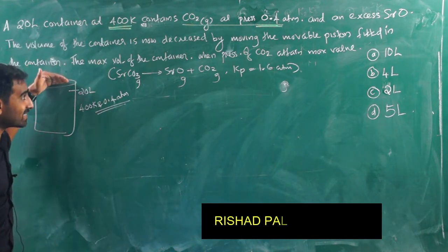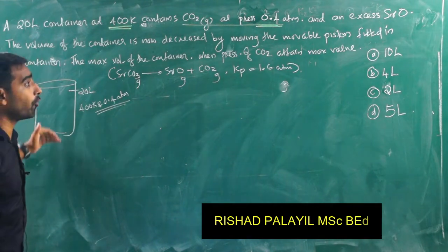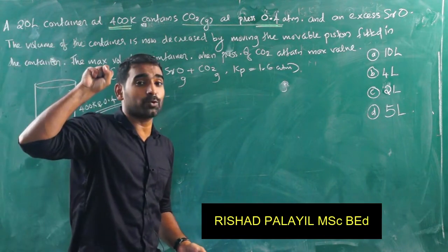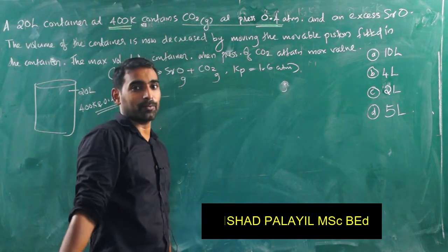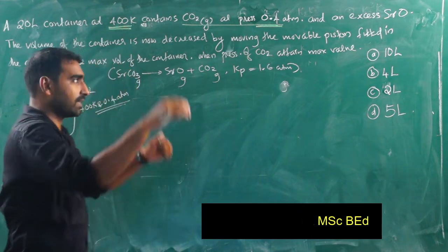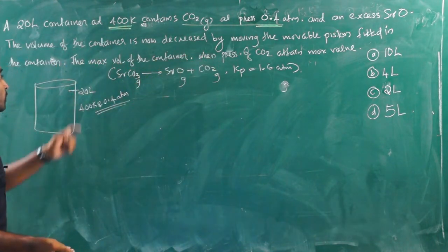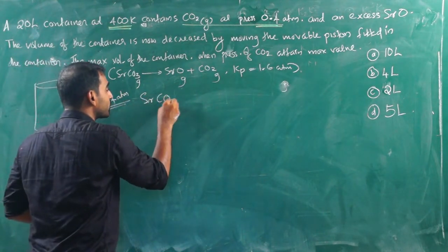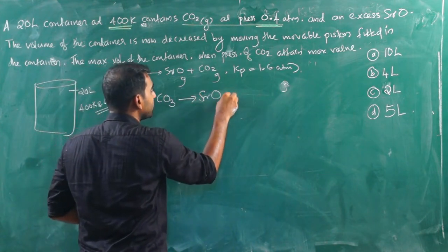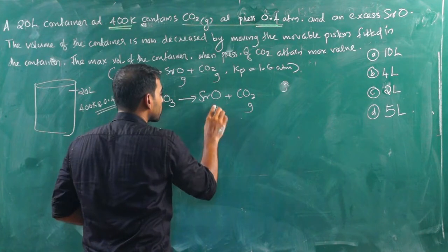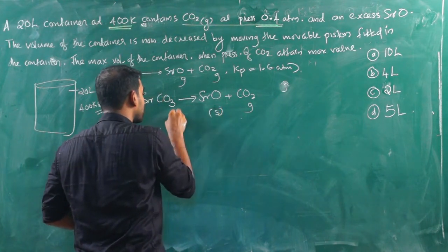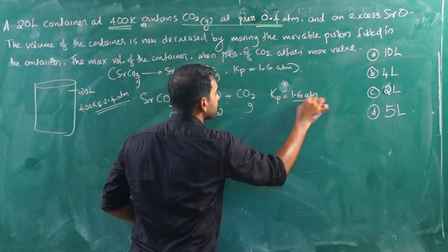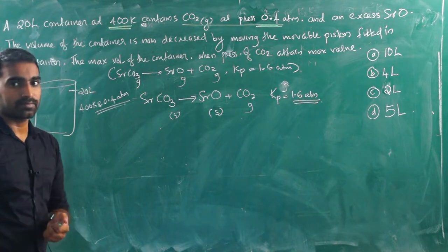The volume of the container is decreased by moving the movable piston. To find the maximum volume when CO₂ pressure attains its maximum value, we first write the equilibrium: strontium carbonate decomposes to form strontium oxide plus carbon dioxide gas. Both SrO and SrCO₃ are solids. Kp is equal to 1.6 ATM.